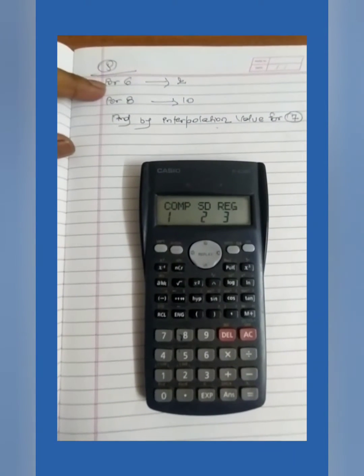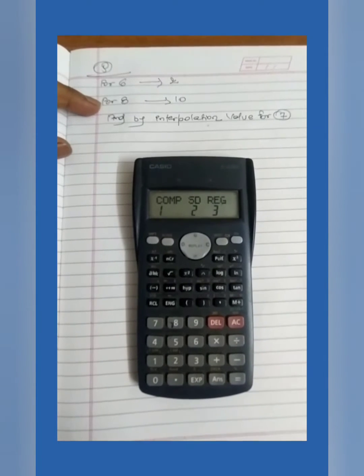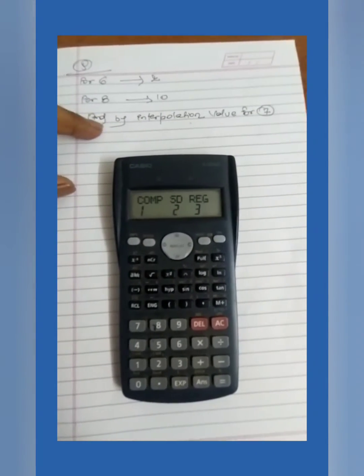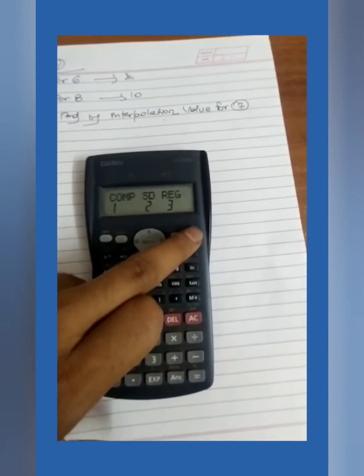For 6 the value is 2, and for 8 the value is 10. Then find by interpolation the value of 7. This tight calculation ke time mein aapko use aane wala hai.